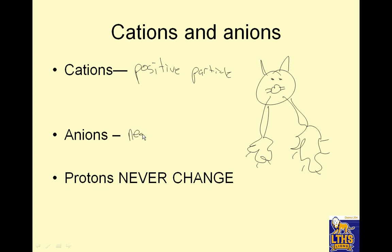An anion is a negative particle. By the way, the way you become a cation is by losing electrons. It's becoming an anion by gaining electrons. And protons never change.